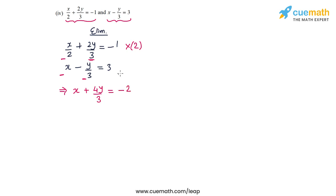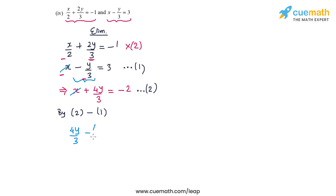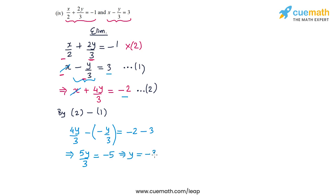Let's call the second equation 1 and this modified first equation 2. Doing 2 minus 1 eliminates x. On the LHS I get 4y by 3 minus (minus y by 3), which is 4y by 3 plus y by 3, giving 5y by 3. On the RHS I have minus 2 minus 3, which is minus 5. This gives y equal to minus 3.